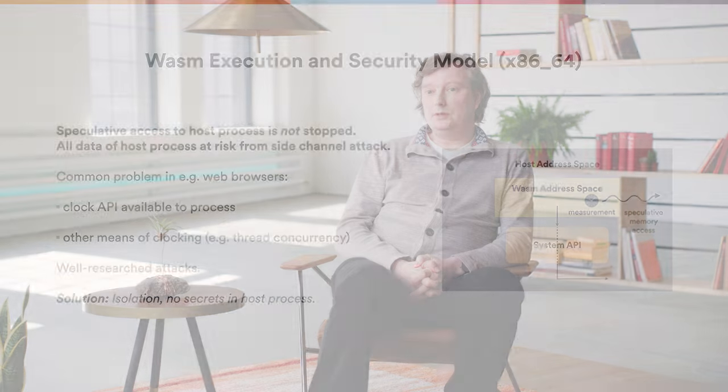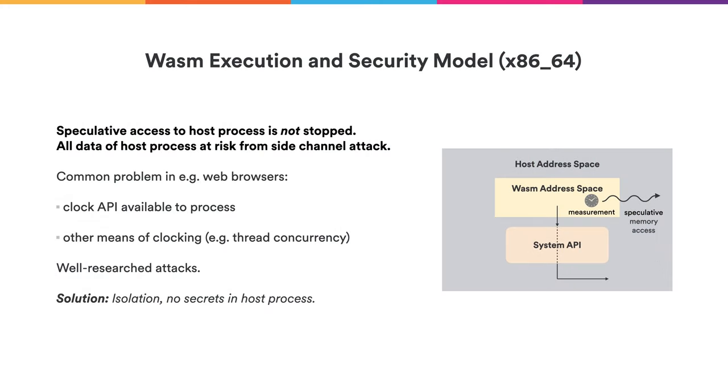Conceptually, this model is sound. It guarantees the integrity of the host process irrespective of what the WebAssembly process is trying to do. However, there is a peculiarity: to the CPU, the distinction between the WebAssembly process space and its host process simply doesn't exist. It's a flat 64-bit address space, and the instructions resulting from WebAssembly translation and the host code are indistinguishable. This means the CPU has no reason to believe there is any distinction between the two, and will happily speculate any out-of-bounds accesses even if the WebAssembly code cannot really execute them. This actually opens the door — it turns out it's relatively easy from WebAssembly code to trigger speculation into the host process code.